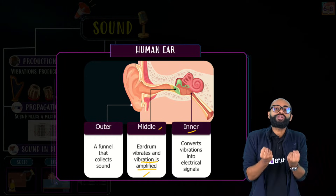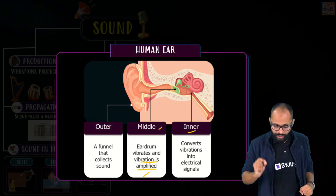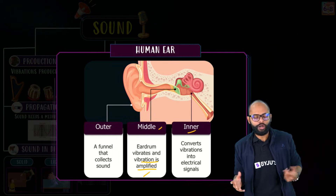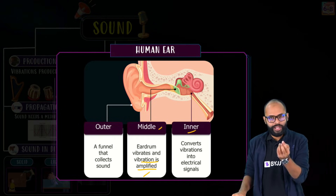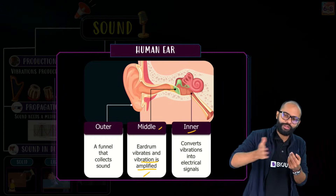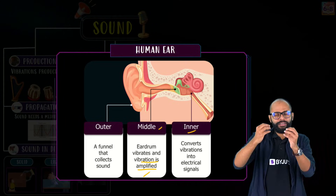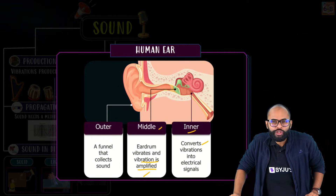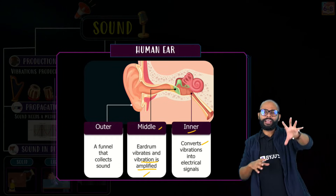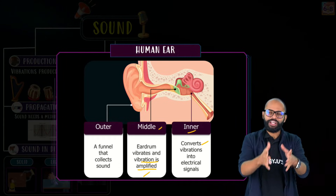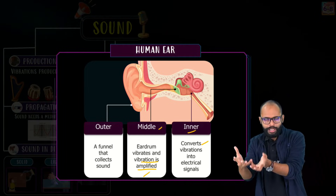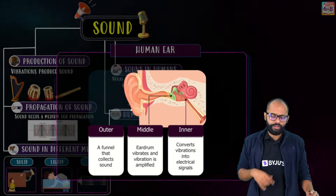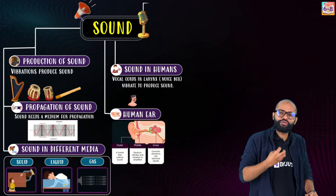Then it comes to the inner ear. In the inner ear we have the cochlea — a spiral-shaped, fluid-filled organ. It has hair-like structures that sense the sound from the fluid and convert it into electrical signals sent to the brain. So the inner ear's work is to convert vibrations into electrical signals.